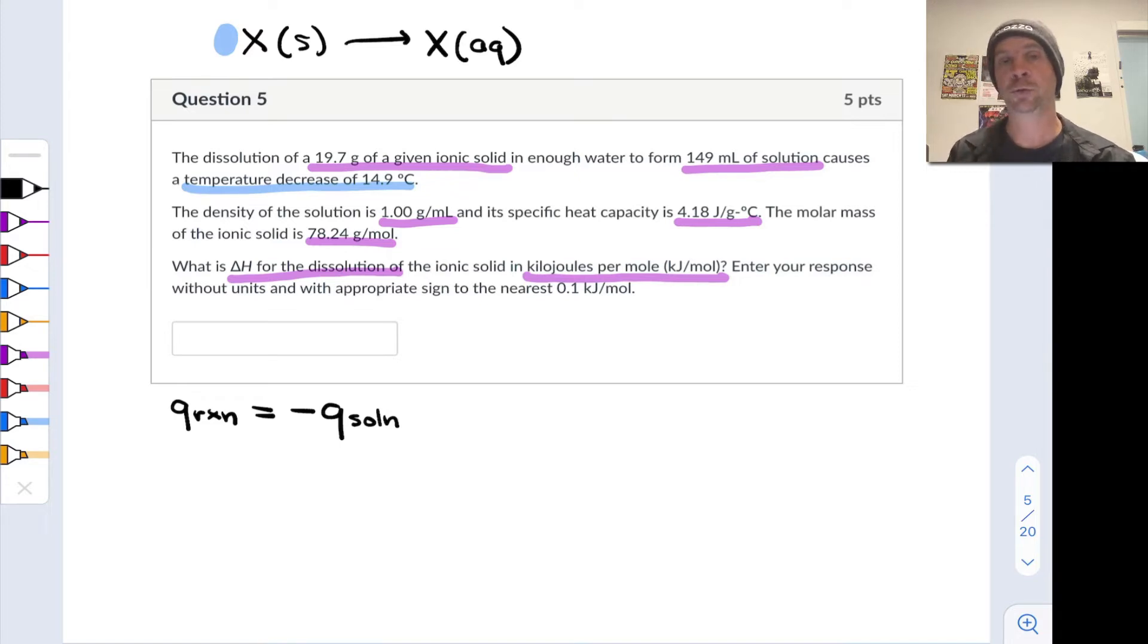Any heat flow that we observe via a temperature change in the solution came from or went to the reaction, the dissolution of the ionic solid. Q reaction, we know, is equal to the total delta H. So I'm going to call that delta H tot at this scale we're dealing with here—at the 19.7 grams of ionic solid scale. We're going to divide that by the number of moles of solid to find the molar enthalpy change. But for now, we want to focus on the heat released or absorbed by the solution.